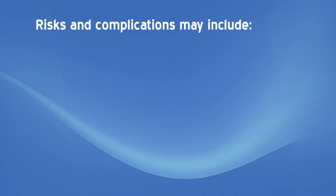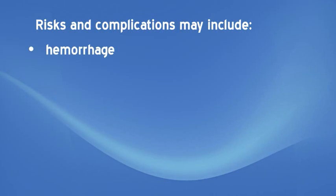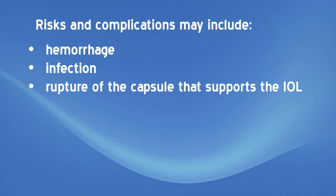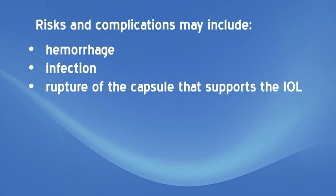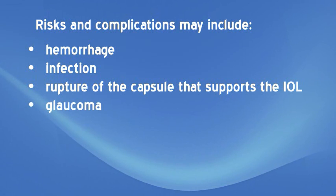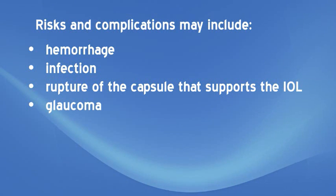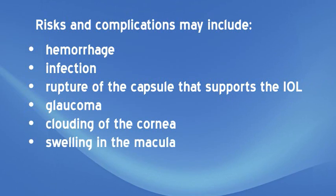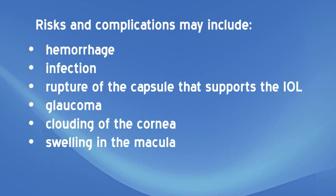Risks and complications associated with cataract surgery and lens implantation may include hemorrhage, infection, rupture of the capsule that supports the IOL, glaucoma or increased pressure in the eye, clouding of the cornea, and swelling in the macula — the central area of the retina — which usually improves with time.